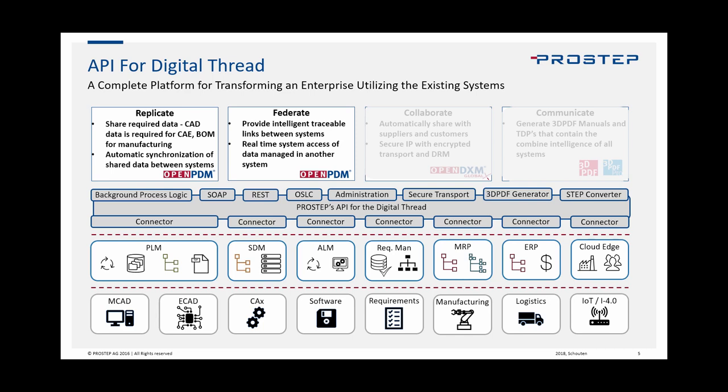The OpenPDM API for the digital thread includes two primary use cases: replication and federation. Replication is needed to share your data between systems — for example, when CAD data needs to be accessible in your simulation data management system to perform an analysis. Federation can enable intelligent, traceable links between your systems when replication is not needed, such as in model-based systems engineering and requirements integration.